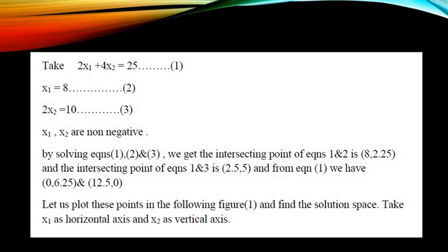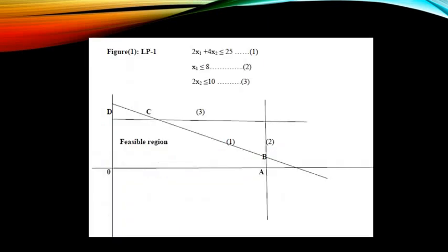We take all three constraints as equality conditions — equation 1, equation 2, and equation 3 — by relaxing the integer requirement. Solving equations 1 and 2 gives intersecting point (8, 2.25); solving equations 1 and 3 gives (2.5, 5); and from equation 1 we get two additional set of points. We plot all these points in Figure 1, taking x1 as the horizontal axis and x2 as the vertical axis.